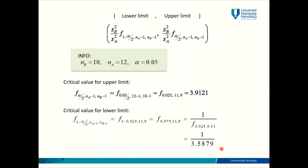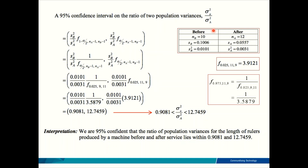Now we have all the information needed to use the formula. All that's left is to substitute all these values carefully into the formula. Finally, you will get the confidence interval to estimate the ratio of the two population variances. The ratio is from 0.081 to 12.7459. There are no units here because this is variance — variance has no unit, though standard deviation does. The interpretation is: we are 95% confident that the ratio of population variances for the length of rulers produced by the machine before and after service lies within 0.081 and 12.7459.